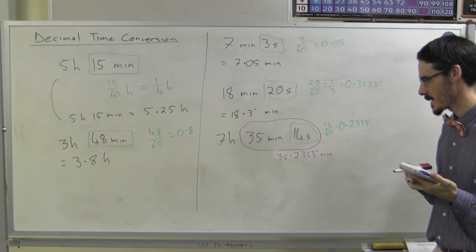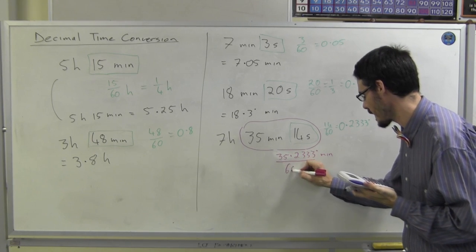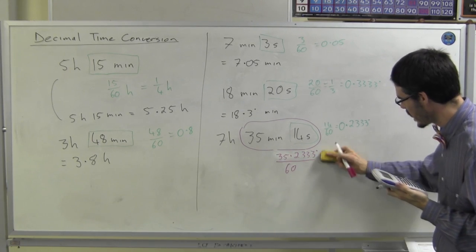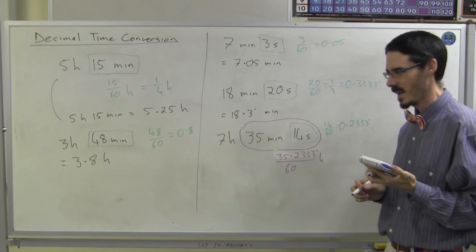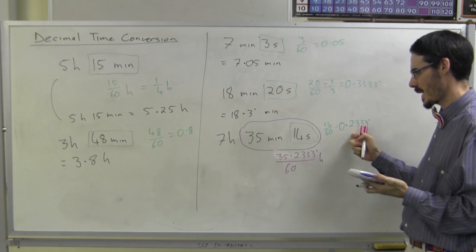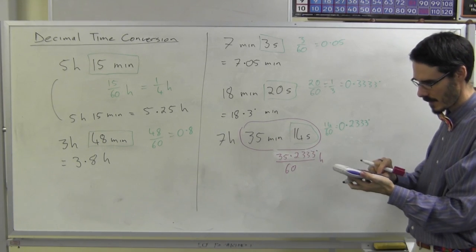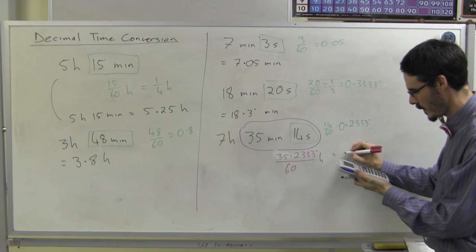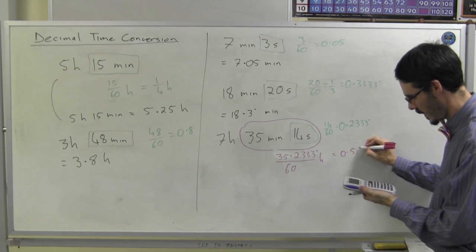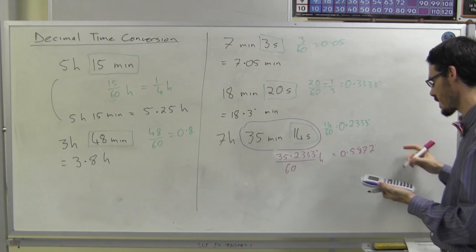But I want that in hours. So I'm going to get that number and divide it by 60 to get the number of hours. Now, if I've already got this number in my calculator, I don't have to type it again. Just add 35 and then divide it by 60. And I've got 0.587 and then 2 recurring.